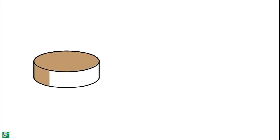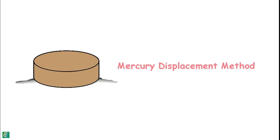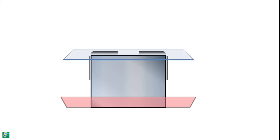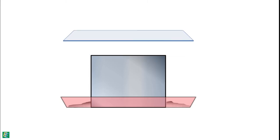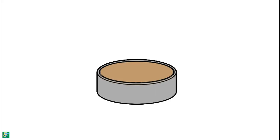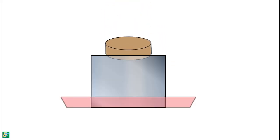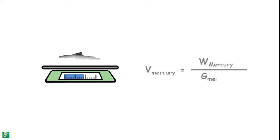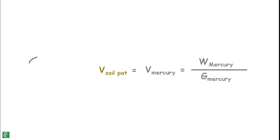The volume of the dry soil is measured by the mercury displacement method. A glass container is filled completely with mercury and placed in a pan. Excess mercury is removed by pressing a glass plate over the top, and any mercury adhered to the sides is wiped off. The dry soil pad is removed from the shrinkage dish and placed on top of the mercury surface, then submerged by pressing a glass plate over the container. The displaced mercury is collected, weighed, and its volume is determined from its weight and specific gravity. The volume of displaced mercury equals the volume of the dried soil pad.